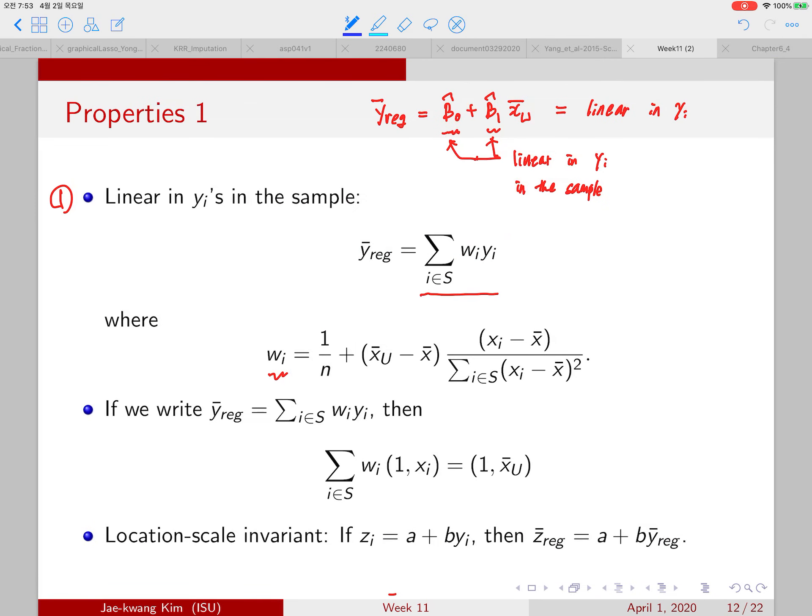So the weight is this form and notice that this is the weight used for y bar. And so that is called the design weight, because it is the weight for the design unbiased estimator, which is y bar. And this is adjustment term.